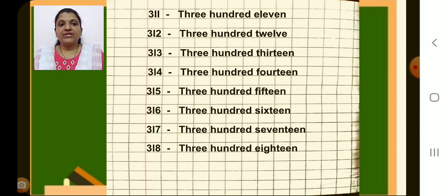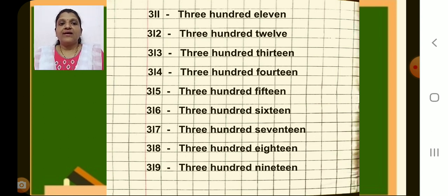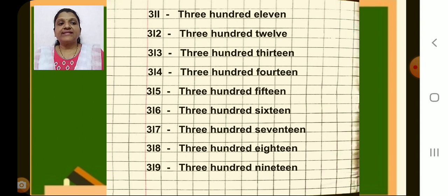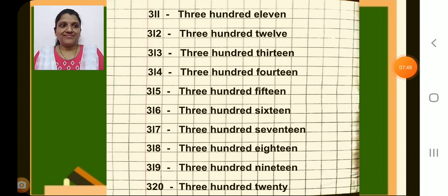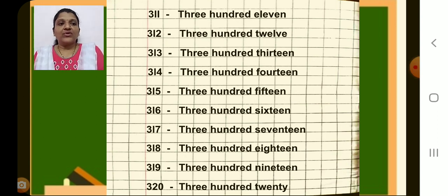Next, 318 — dash, write 318. Next, 319 — put a dash, write 319. Next, 320 — put a dash, write 320. Have you completed till here? Now, again move to the next page.